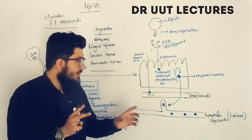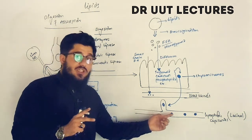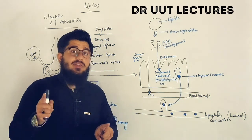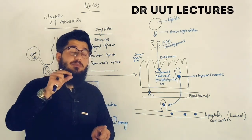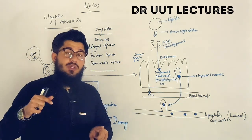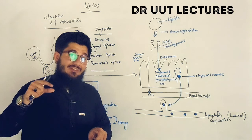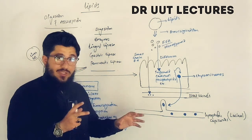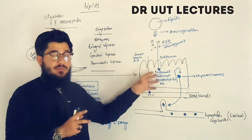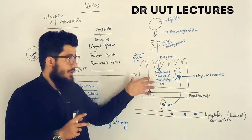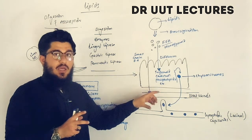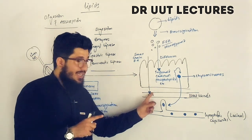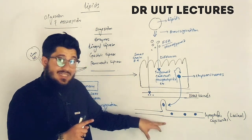To come to the point, the chylomicrons travel through the lymphatic system and then join the blood vessels through the subclavian vein. In this way, we understand how fatty acids are digested and absorbed, becoming part of the blood both directly and indirectly.